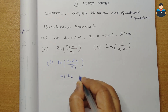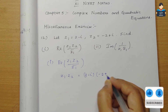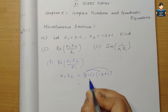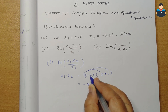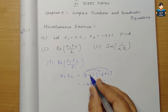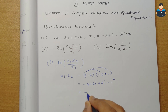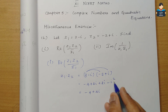We calculate z1 into z2: 2 into minus 2 gives minus 4; 2 into i gives plus 2i; minus i into minus 2 gives plus 2i; minus i into i gives minus i squared. Simplifying: minus 4 plus 4i minus i squared. Since i squared equals minus 1, this becomes minus 3 plus 4i.